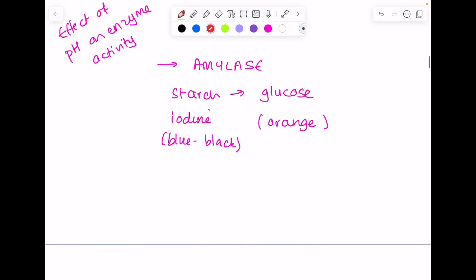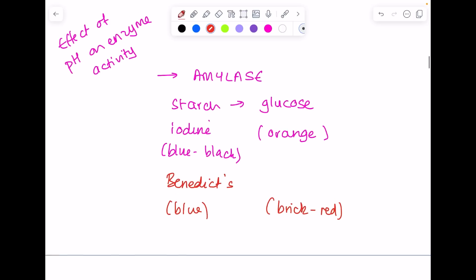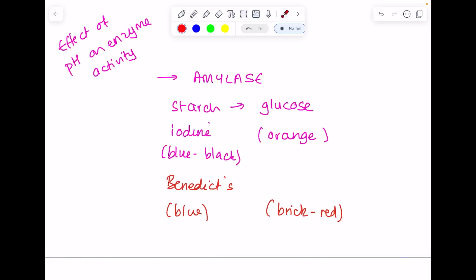They could also ask you about Benedict's to monitor this. In the presence of starch, Benedict's will be blue, and in the presence of glucose it will be brick red. Based on how quickly that color changes to brick red, you can predict that the pH is optimal for amylase to catalyze the breakdown of starch to glucose.